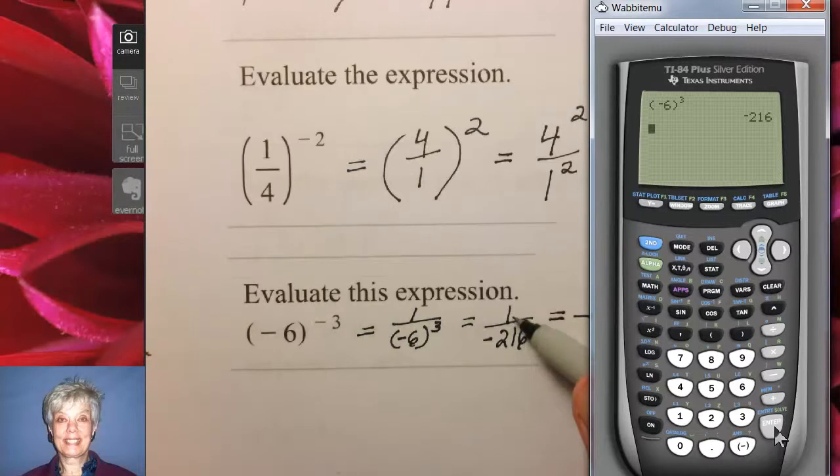After all, a positive 1 divided by a negative 216, well positive divided by negative is negative, so that makes the entire fraction negative.